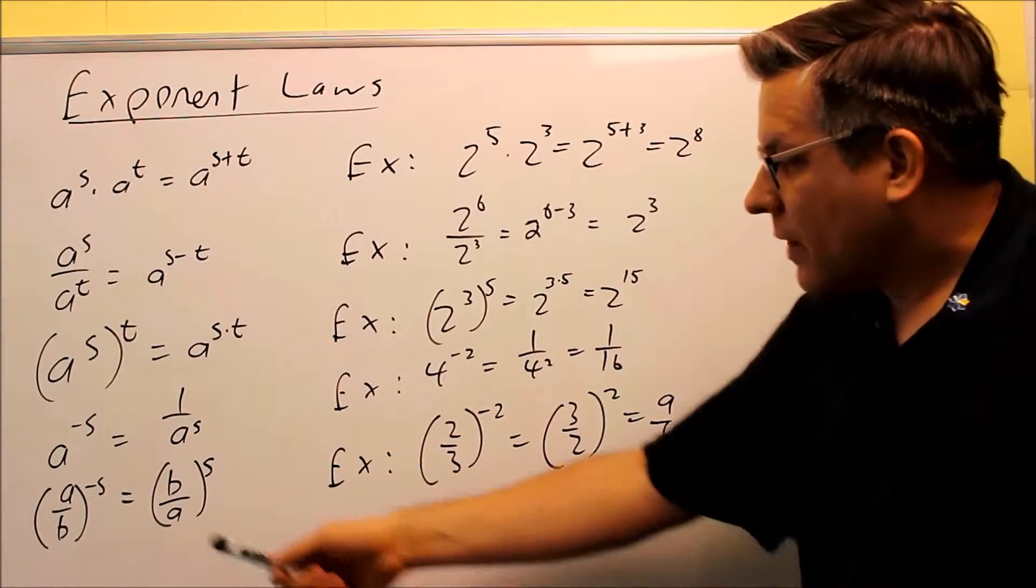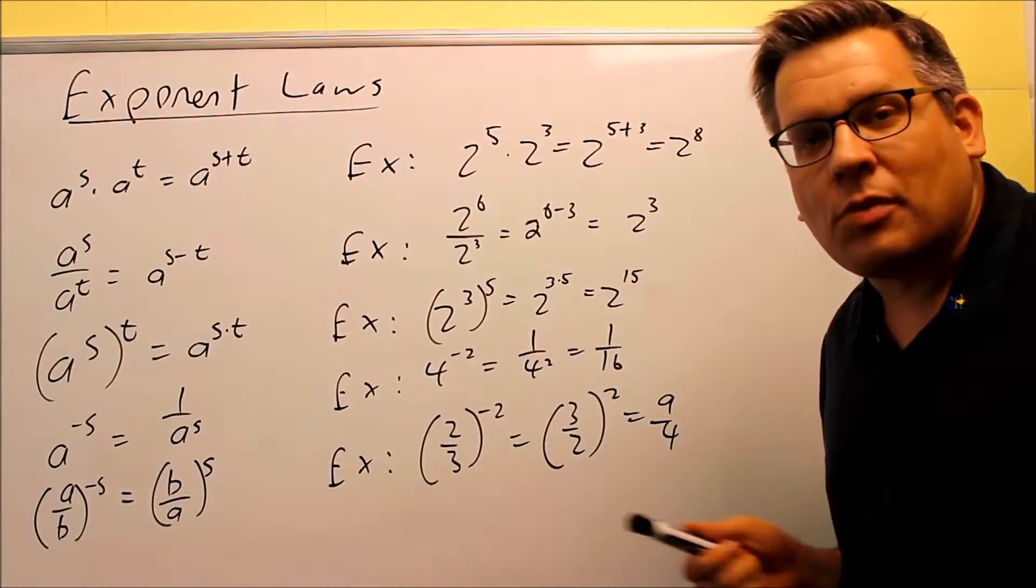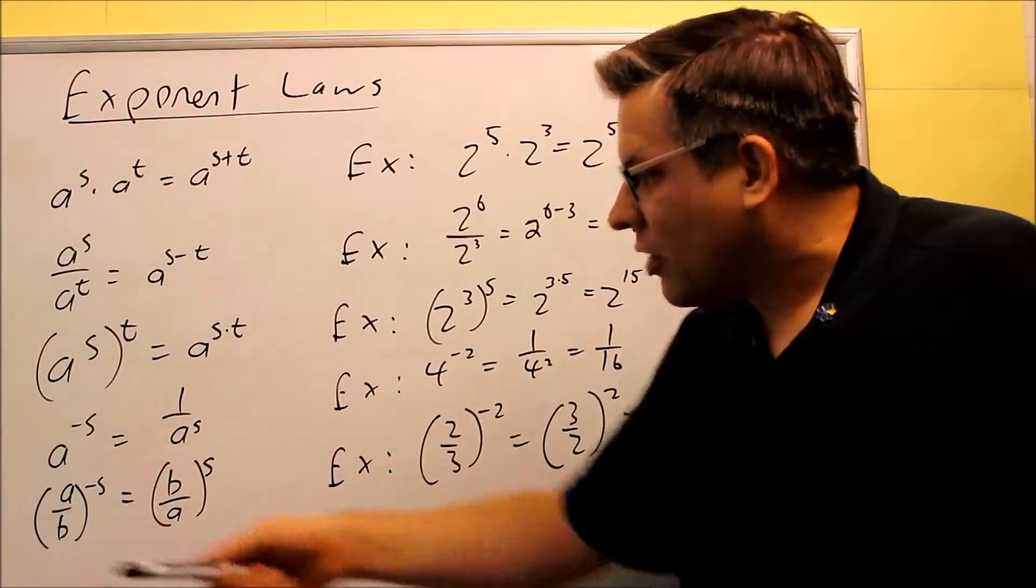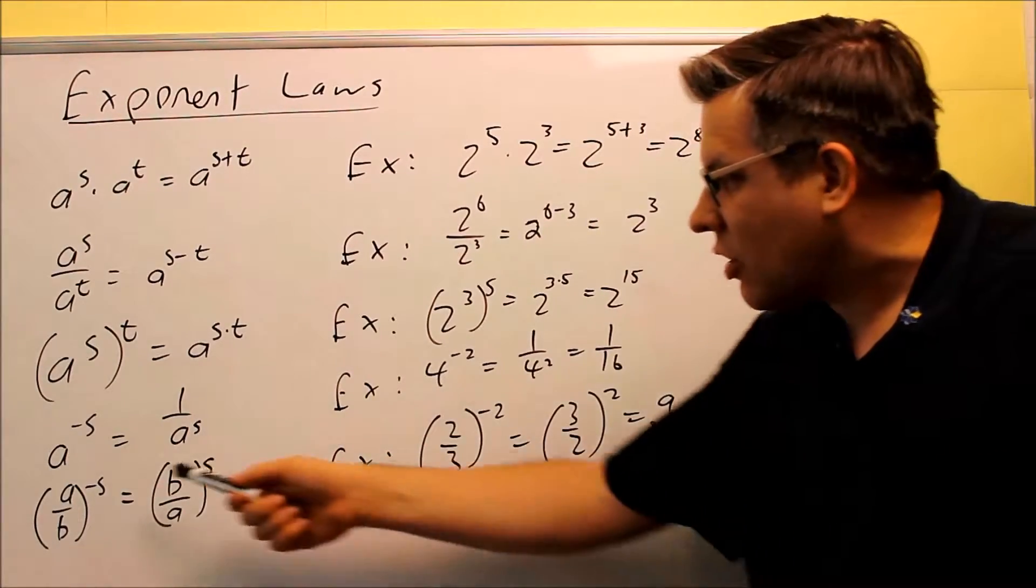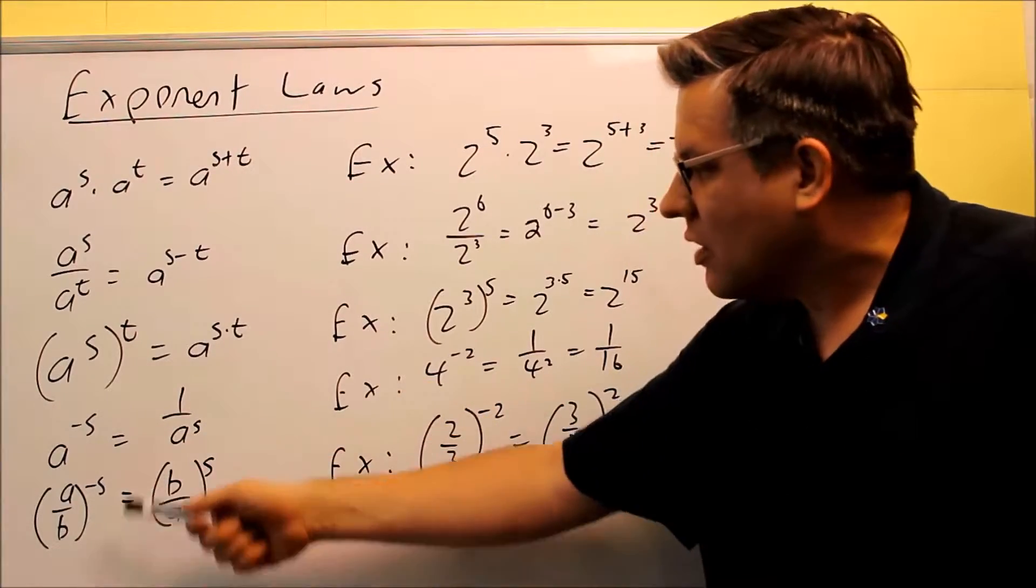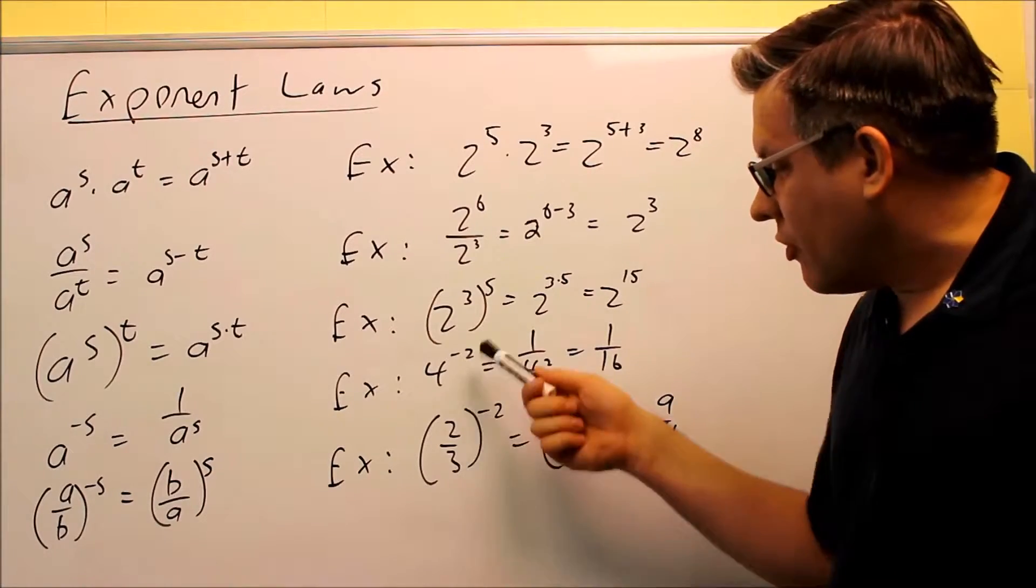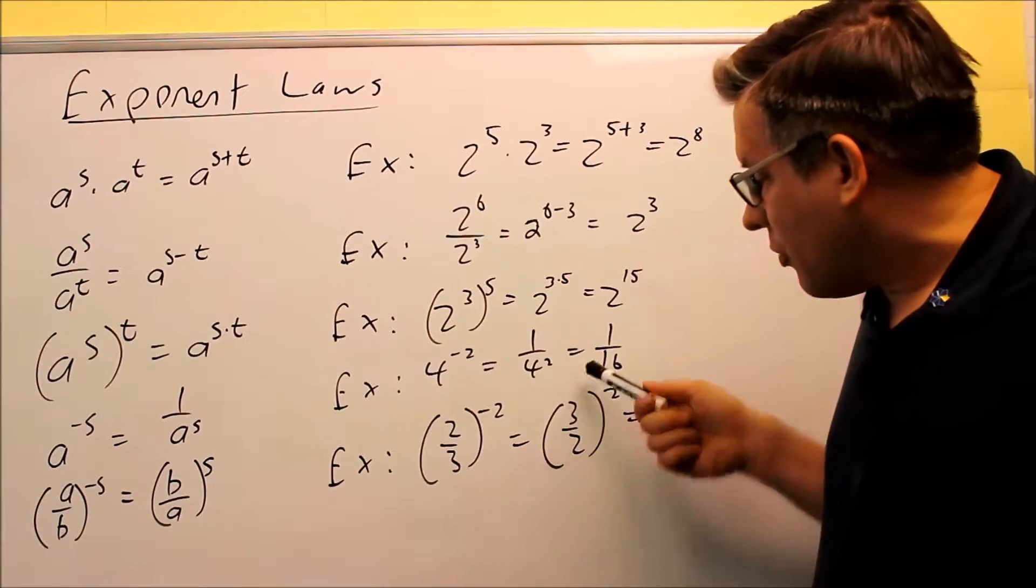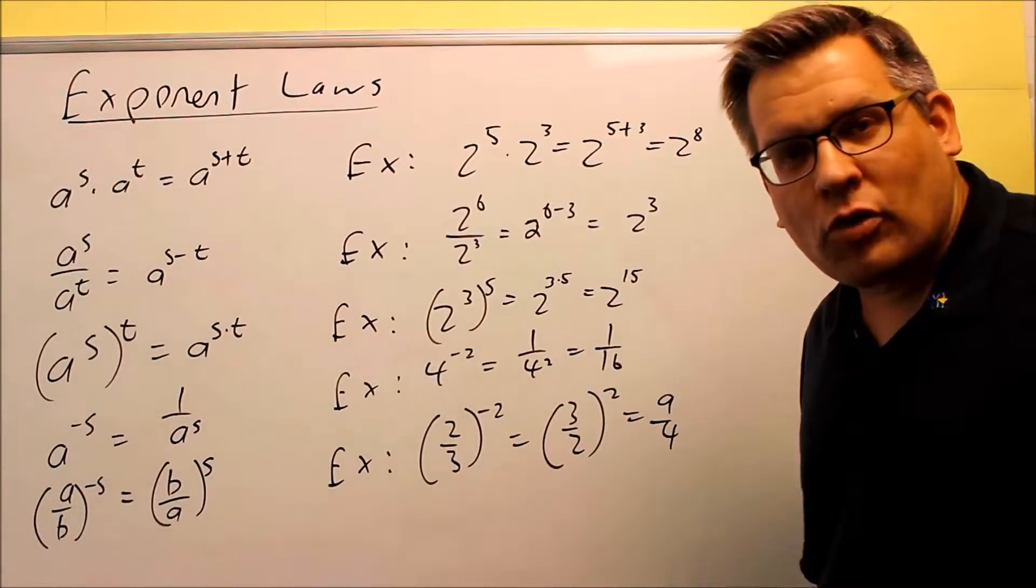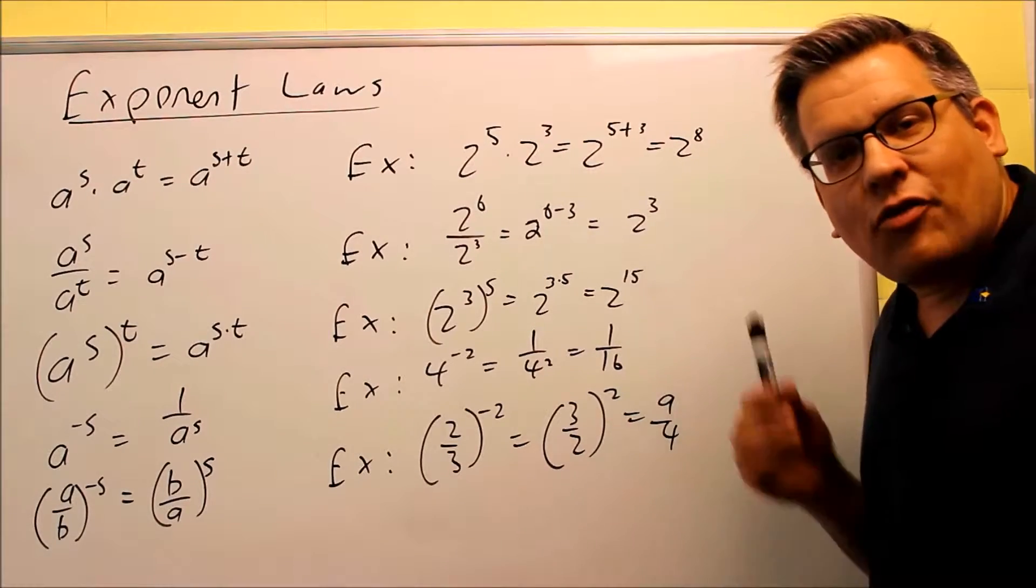For the last one, this is one where if you have a fraction that's raised to negative power, what you can do to make it easier to get rid of the negative exponent if you don't want to deal with negatives, is you can flip the fraction inside and then that's going to automatically change the sign of the exponent on the outside. So if we flip this, negative s will turn into a positive s. So for this one, if you take 2 thirds and you flip it and you get 3 halves, that changes the exponent on the outside, and you'll get 9 fourths as the answer. So these are the main ones I want to take a look at for this class.